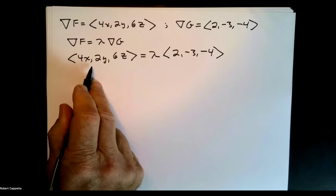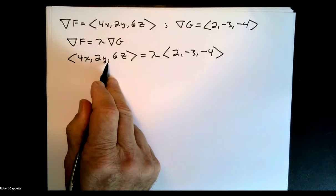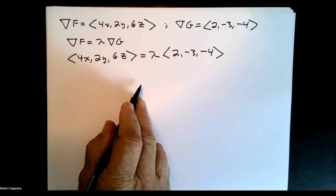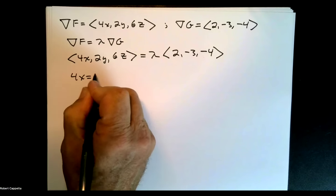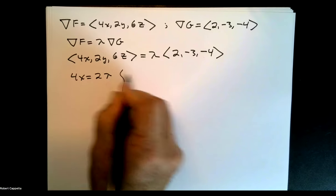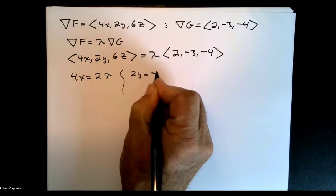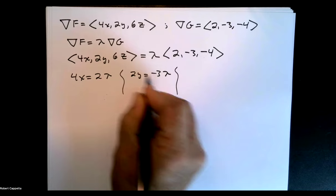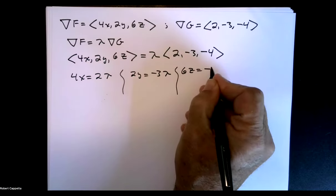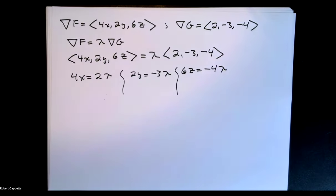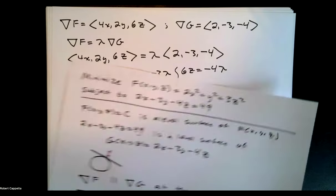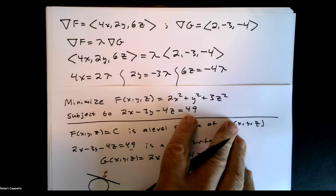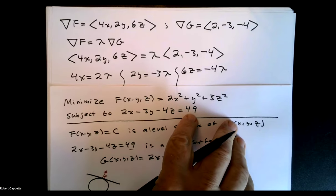The gradient of F is in the same direction as the gradient of G, so the gradient of F is a multiple of the gradient of G. This gives us three equations: 4x equals 2 lambda, 2y equals negative 3 lambda, 6z equals negative 4 lambda. We need one more equation — the point x, y, z must be on the constraint equation, which was 2x minus 3y minus 4z equals 49. That will be the fourth equation.